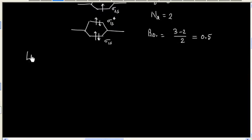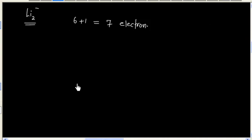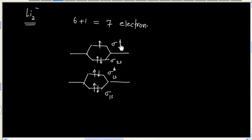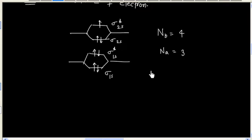Now let us find bond order for Li₂⁻, that is 6 plus 1, so 7 electrons. Let us draw the molecular orbital diagram. We have 4 bonding electrons and 3 anti-bonding electrons. So bond order is (4 minus 3) divided by 2, that is 0.5.